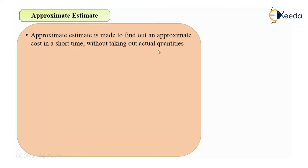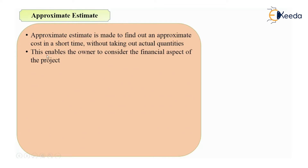Remember, you are not finding out the actual quantities of various items of work. Instead, from your experience, you can say that in a particular locality the cost of construction per square foot or per meter square is a certain amount, and from that you can find the probable cost of a particular structure in a short time. So approximate estimate is made to find out an approximate cost in a short time and without taking actual quantities.